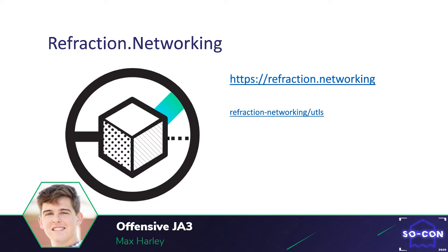Luckily, we discovered a library called UTLS written by refraction.network, an organization dedicated to circumventing censorship. It provided us a way to use custom parameters in the client hello packet and would return a transport object. The only problem was that it was fairly difficult to use since it provided so many options — we really just wanted an interface for creating JA3 signatures. So we wrote a wrapper library that allows users to simply type in a JA3 string and it would configure an HTTP transport object for you.